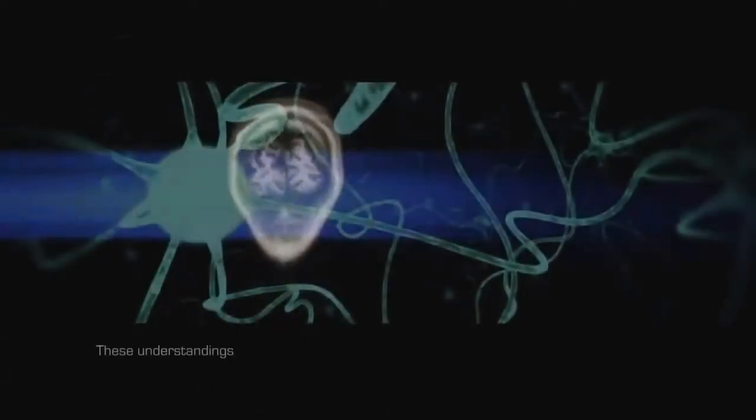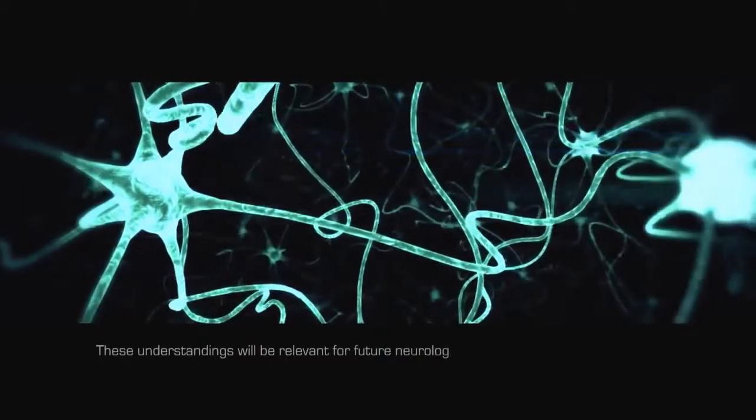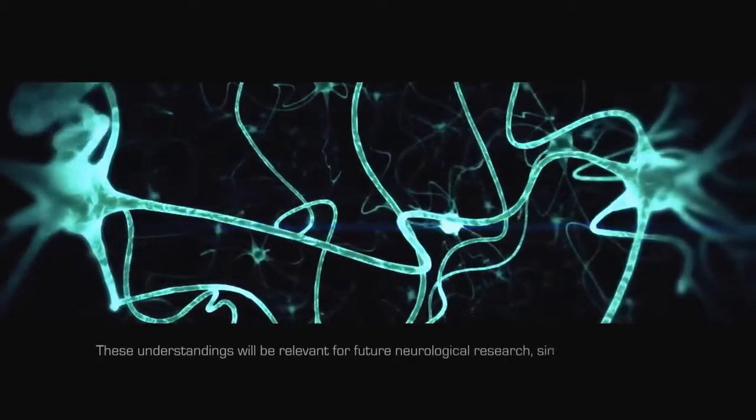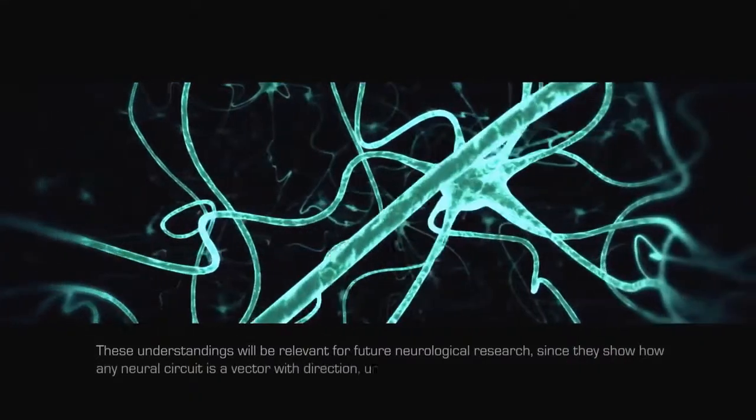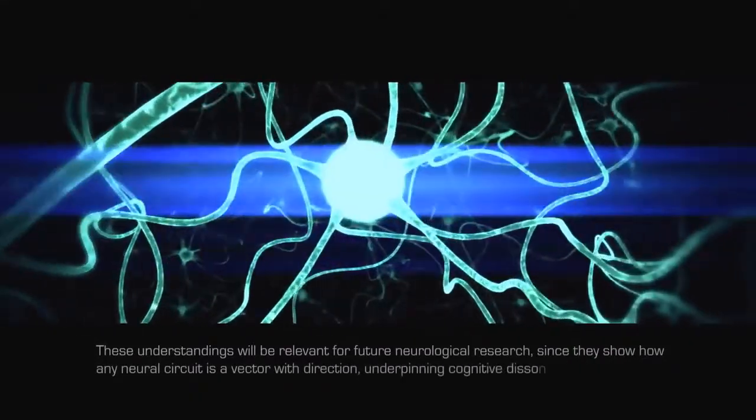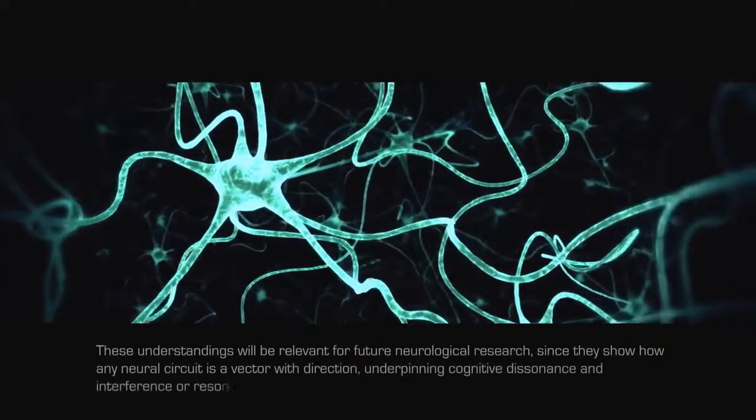These understandings will be relevant for future neurological research, since they show how any neural circuit is a vector with direction, underpinning cognitive dissonance and interference or resonance within C.